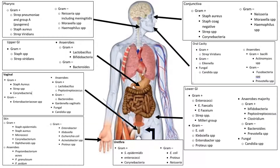And there we have it — a quick overview of the normal flora of the human body broken up by sites. We're back on the summary slide where you can see it all put together again. These are by no means exhaustive lists of the bacteria found at these sites, but these are the ones we think about most commonly. Thank you for sticking with me through this quick review, and I hope you have a great rest of your day.